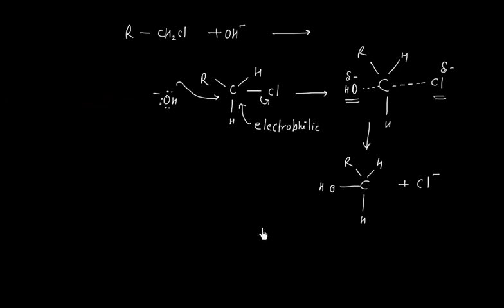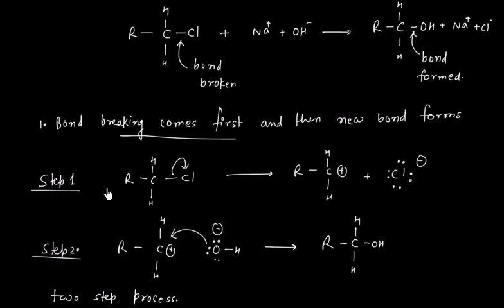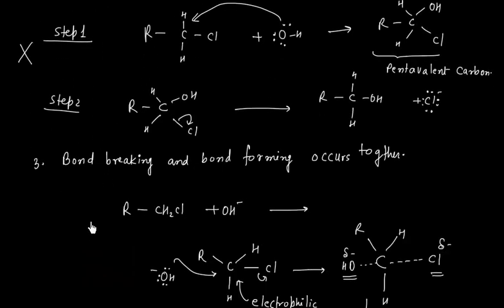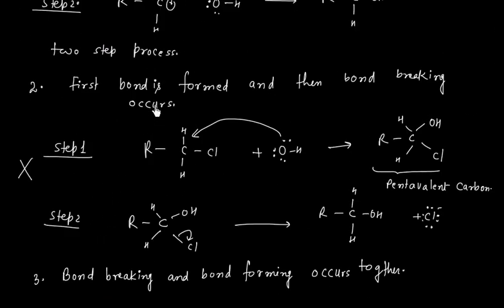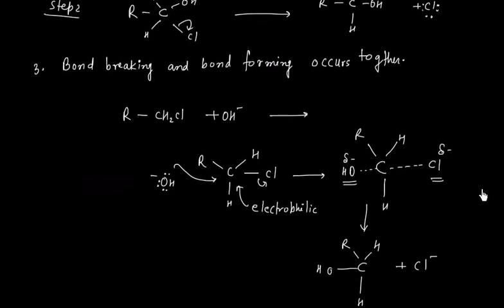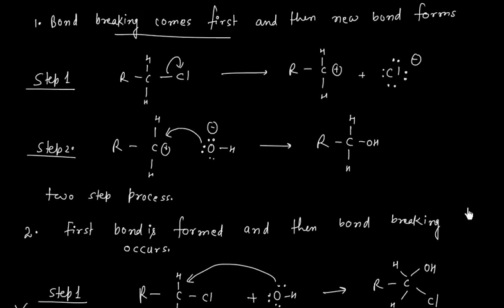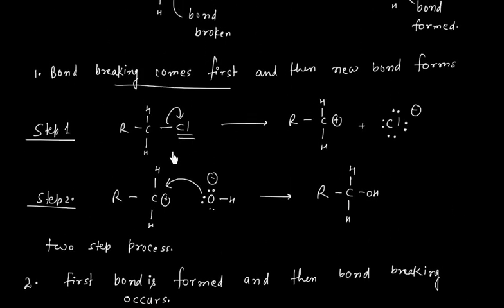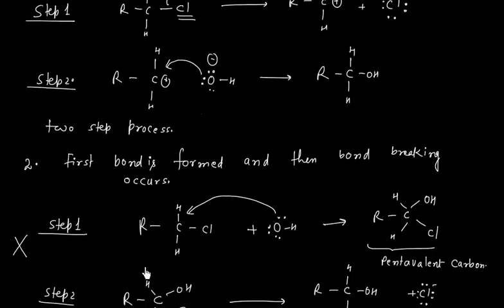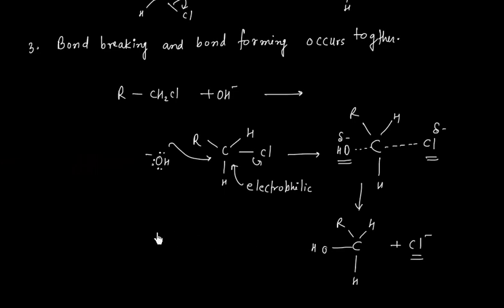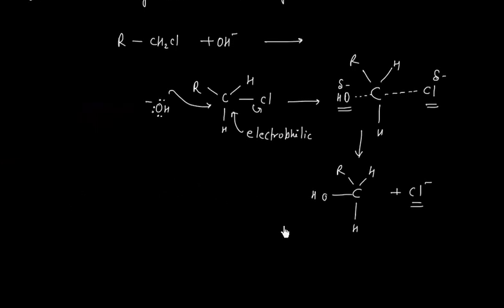So we have three possibilities: first, bond breaking comes first; second, bond forming comes first — this is ruled out because of the pentavalence of carbon; third, bond breaking and bond forming occur together. In both the first and third possibilities, the Cl group has left the reactant, so this kind of group is called a leaving group.